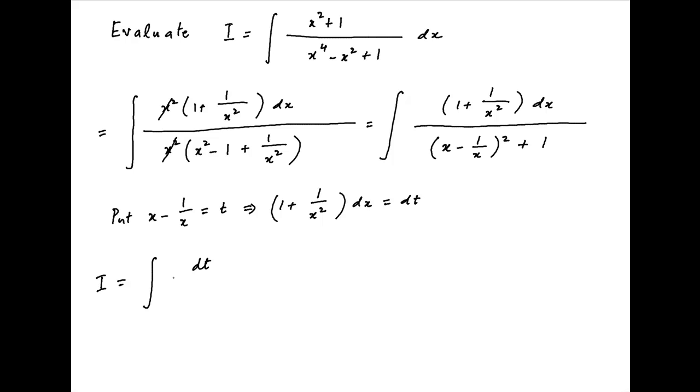Therefore, I can be written as integral dt upon (t-square plus 1), which equals tan inverse t plus a constant of integration. Substituting the value of t, I equals tan inverse of (x minus 1 upon x) plus the constant of integration, and this is the required answer.